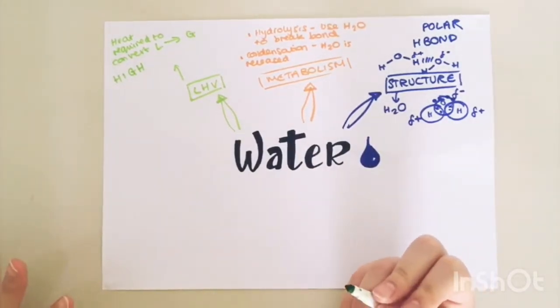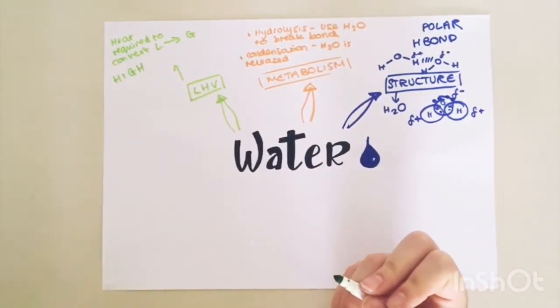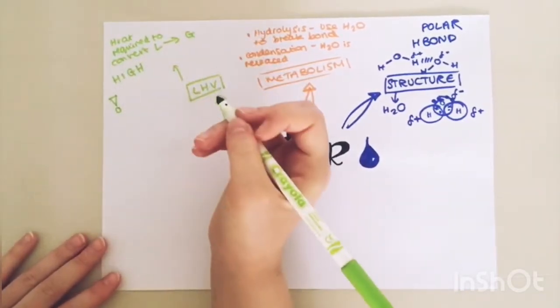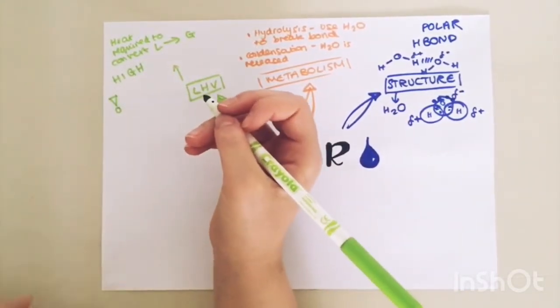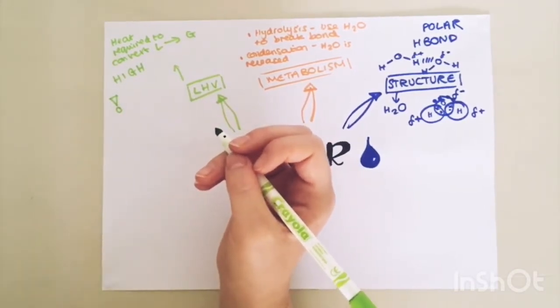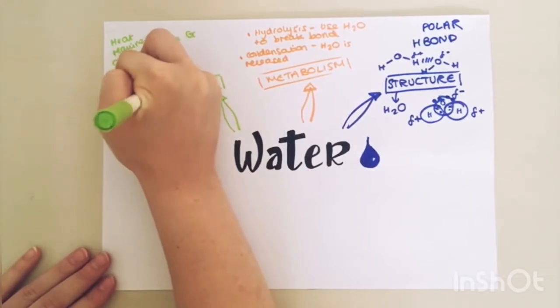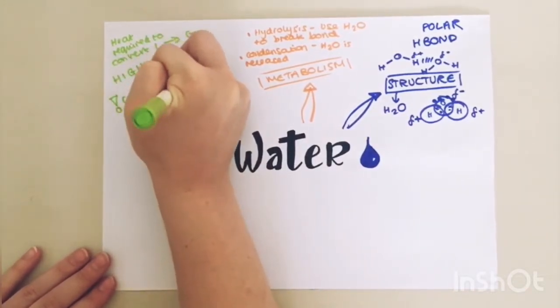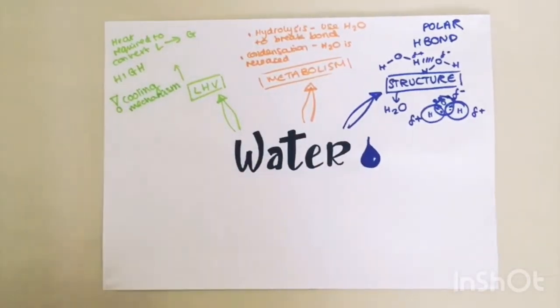Water's latent heat of vaporization is very high, which basically means it requires a lot of energy to convert it from a liquid to a gas. The biological importance of this is that heat can be lost from a surface when it evaporates from it, which acts as a cooling mechanism, for example sweating. Animals that live in deserts would not be able to survive without this mechanism.